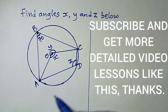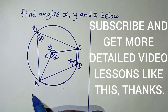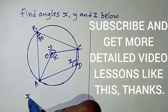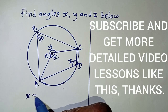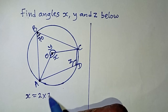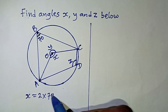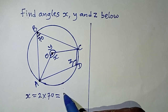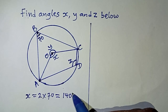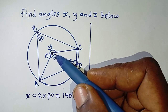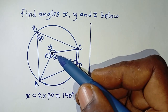With that theorem, we can straight away obtain the value of x. x is equal to 2 times 70, which gives us 140 degrees. So the value of x is 140 degrees.